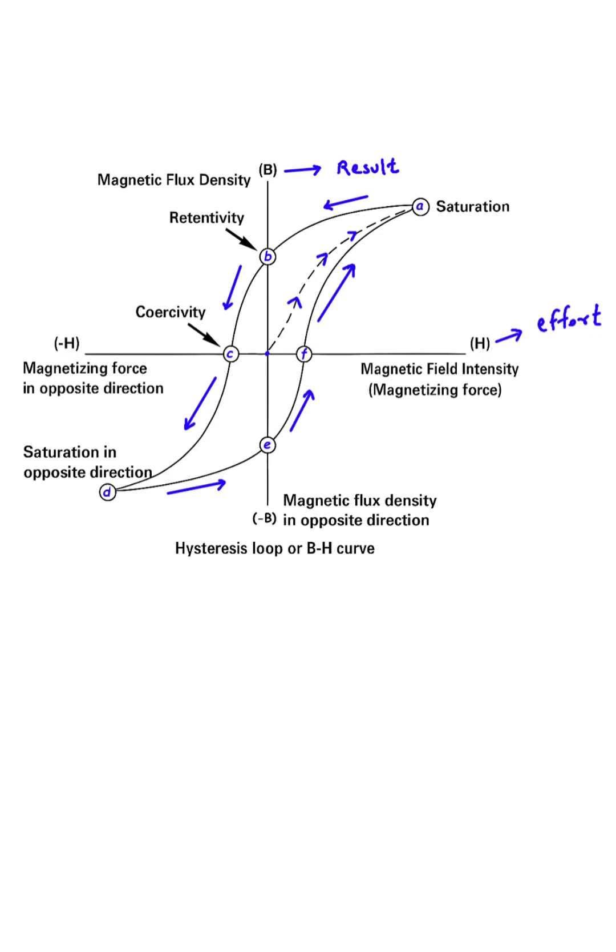To get rid of this magnetic memory, we have to apply an effort in the opposite direction, moving to the left. The amount of reverse effort needed to bring the magnetic result back to zero is called coercivity, which is at point C.